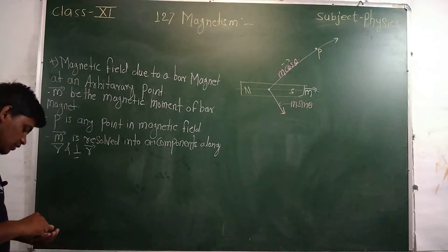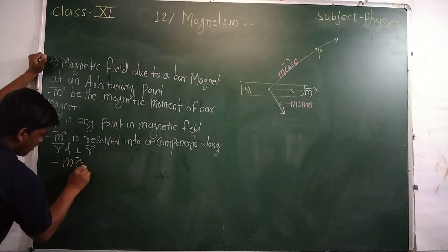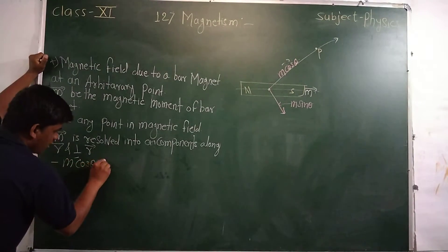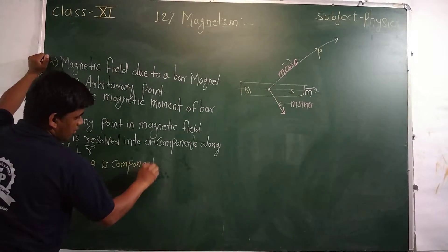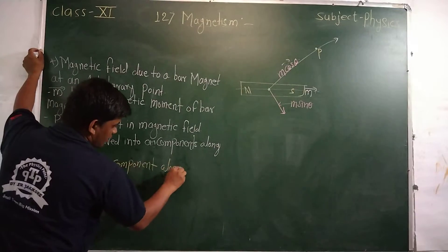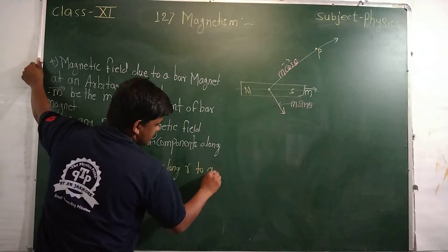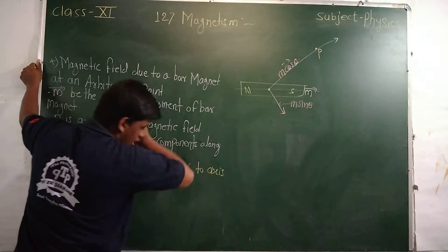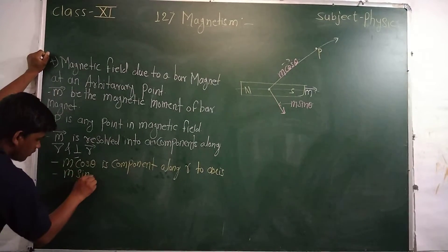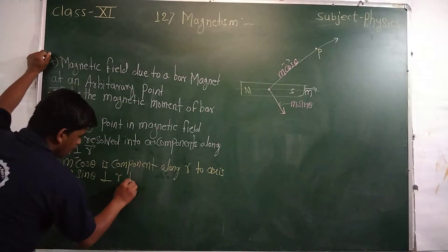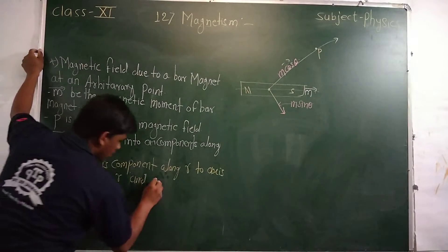Let us write this down. m cosθ is the component along R — along the axis — and it is treated as an axial point. m sinθ is perpendicular to R and is treated as an equatorial point.